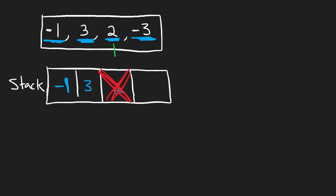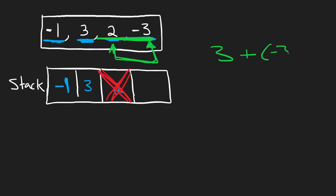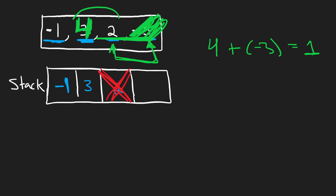We can decide how a collision is going to be resolved by adding the two asteroids together. If 2 and negative 3 are colliding, 2 plus negative 3 gives negative 1 — the negative asteroid wins. If positive 3 plus negative 3 gives zero, both asteroids are destroyed. And if it was positive 4 plus negative 3, giving positive 1, the right-moving asteroid is destroyed but the left one in the stack survives.